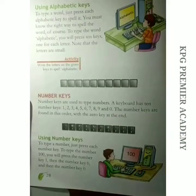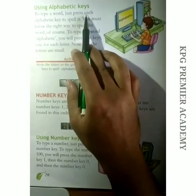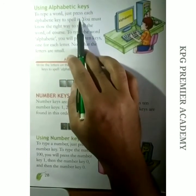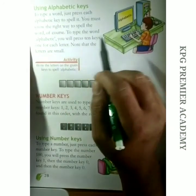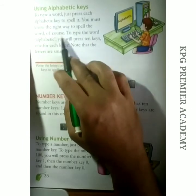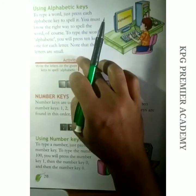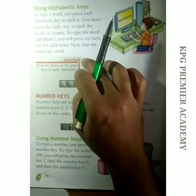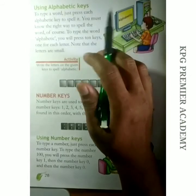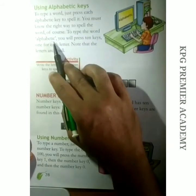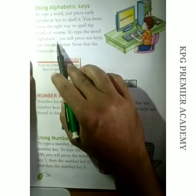We'll turn to the next page, page number 28. Using alphabetic keys: to type a word, just press each alphabetic key to spell it. To write, we have to press the letters or alphabetic keys on the keyboard. You must know the right way to spell the word, of course. To type the word 'alphabetic', you will press 10 keys — one for each letter. Note that the letters are small.